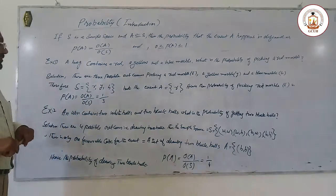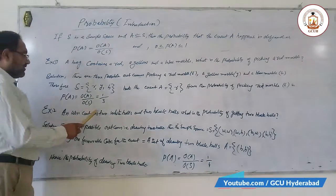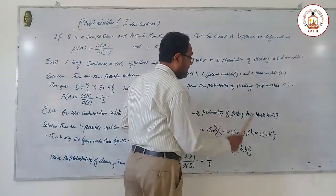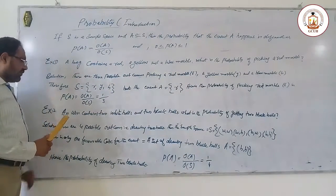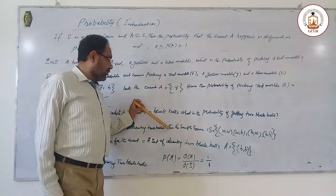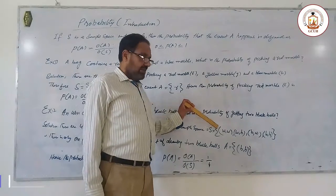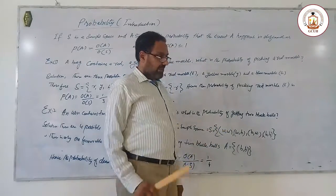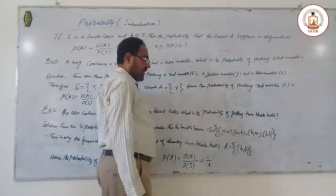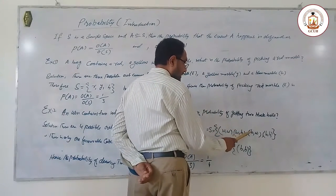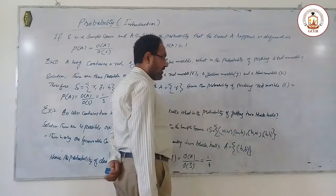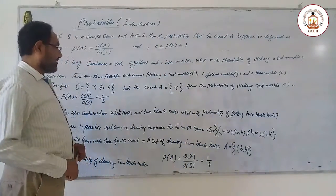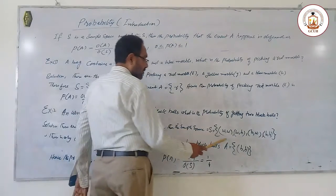Now the second example. An urn contains 2 white balls and 2 black balls, so there are 4 balls total. What is the probability of getting 2 black balls? The sample space contains 4 possible outcomes: both white, white then black, black then white, or both black.